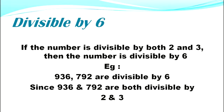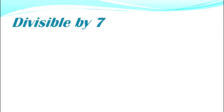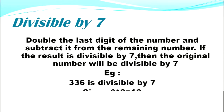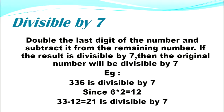Divisible by seven: double the last digit of the number and subtract it from the remaining number. If the result is divisible by seven, then the original number is divisible by seven. Example: 336 is divisible by seven since 6 × 2 = 12, and 33 − 12 = 21, which is divisible by 7.